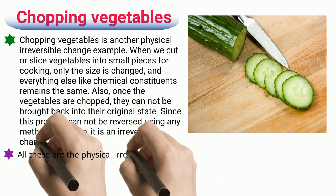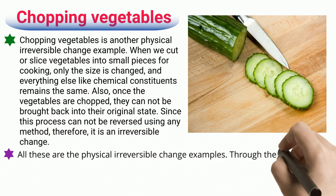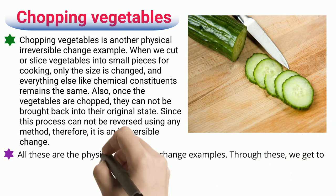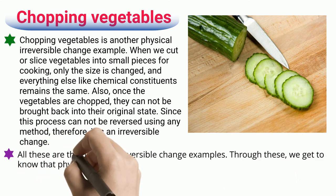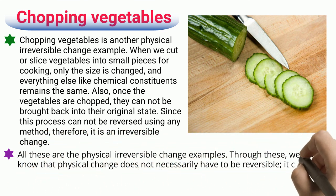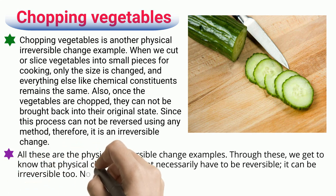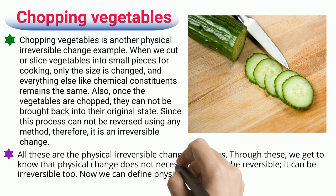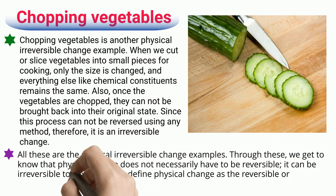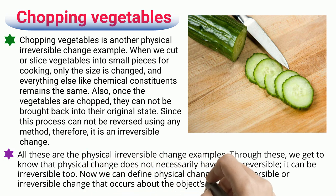All these are the physical irreversible change examples. Through these, we get to know that physical change does not necessarily have to be reversible — it can be irreversible too. Now we can define physical change as the reversible or irreversible change that occurs with respect to the object's physical properties.